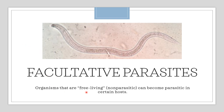Organisms that are free-living or non-parasitic can become parasitic in certain hosts. These organisms are called facultative parasites. An example is Pelodera strongyloides, a free-living soil nematode or roundworm that usually lives in the superficial layers of the soil as a non-parasite. However, it can penetrate the skin of dogs lying in moist dirt and downer cattle, establishing a parasitic skin infection.